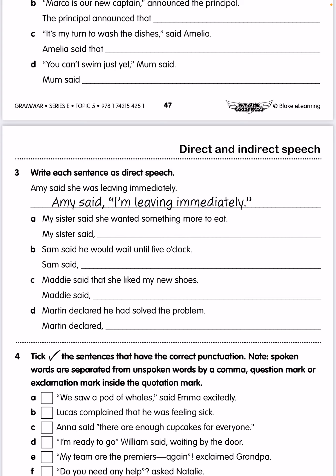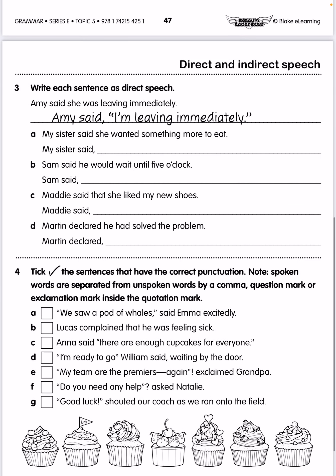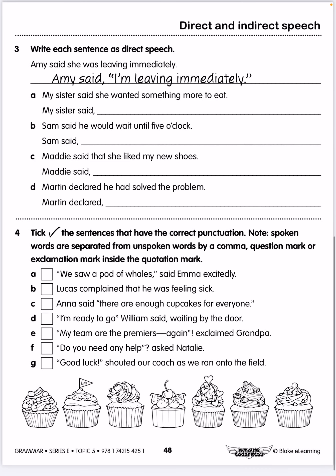Actually, the commas have already been done for you. It says 'my sister said, comma' and then you're going to write what the sister said. 'Sam said, comma' — so it's already put them in there to separate the unspoken and spoken word. And number four, your last one, is you're going to tick the sentences that have the correct punctuation. Spoken words are separated from unspoken words by a comma, a question mark, or an exclamation mark inside the quotation marks. Read through those and if it's got the correct punctuation, give it a tick. If it's not punctuated correctly, give it a cross or leave it blank.